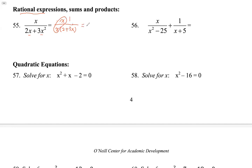So this simplifies to 1 over (2 plus 3x). It cannot be simplified further because the numerator is just 1 now. So this is done — this is simplified.